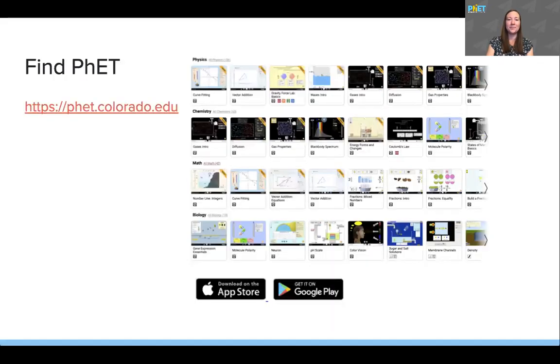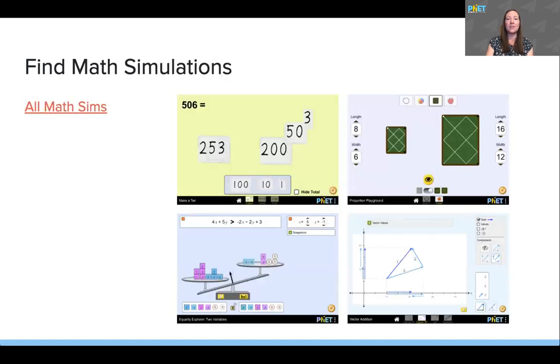Where can you learn more? At the PhET website, you can find our collection of over 160 simulations and filter by topic, grade level, and more. We also have apps that make it really easy for students to access simulations at home. There are over 40 math simulations covering K-12 and college level topics. Here are some examples covering place value and addition, ratio and proportions, solving equations, and vectors.